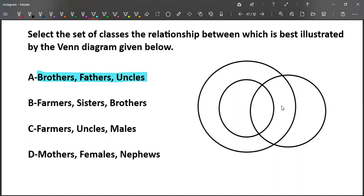Let us now see whether this particular Venn diagram suits for these three sets - brothers, fathers and uncles. Let us check.